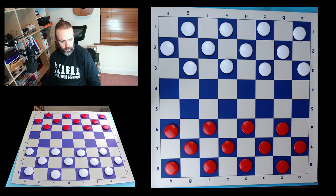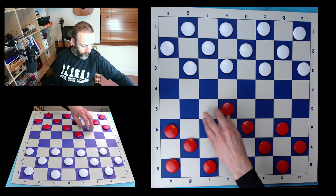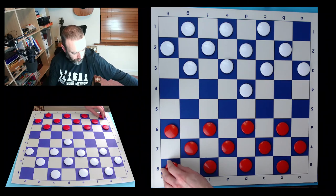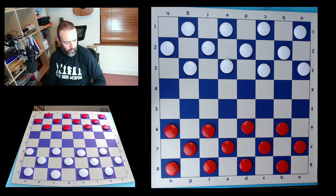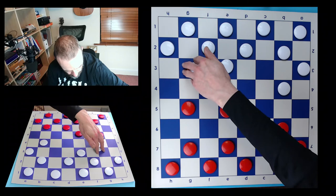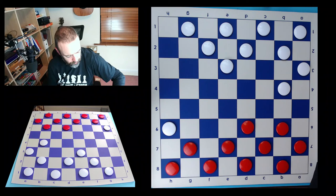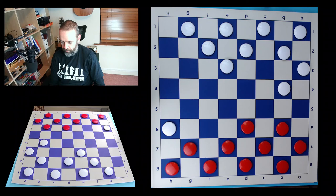Now to cover some basic opening principles, it's usually a good idea to try to develop your single corner for both sides, and this may involve trades, equal trades which are fine. It's important to watch out for careless moves in the opening. They can lead to losing material. Here for example, this blunders a piece. Here's a two for one, forces a capture here, and then white captures two. And you're a piece down after only a few moves.